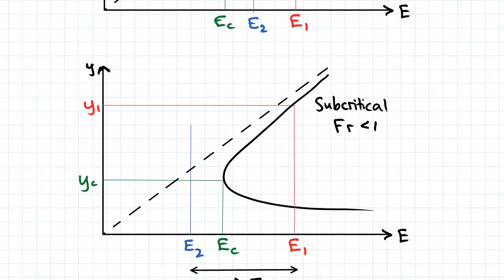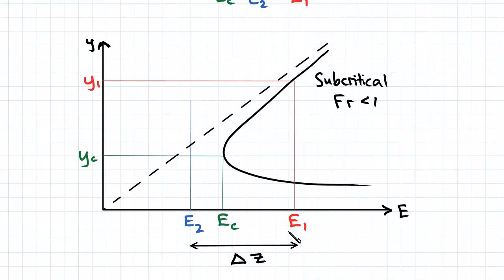But for this case, when we've got a large delta z, which is the cause for an e2 less than eC, we have to account for this.